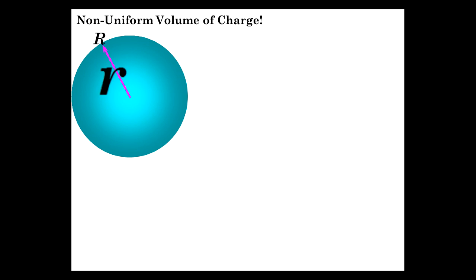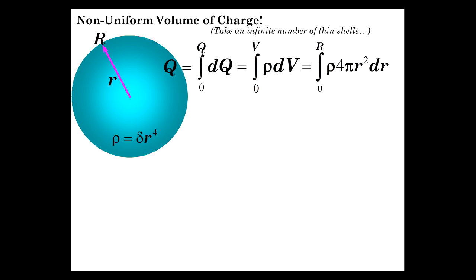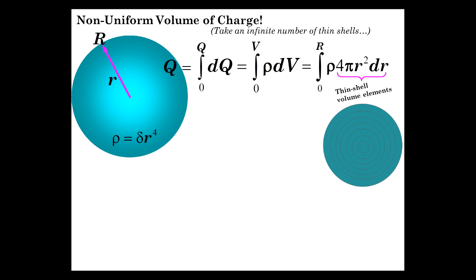You will recognize this example as one we did earlier — finding the electric field inside a non-uniform volume of charge. But this time we're going to find the potential everywhere in space. First, a quick review of how to find the electric field. The volume charge density is δr⁴. So we said Q is the integral of all the dq's, which is the addition of all the ρ dV's — ρ 4πr² dr — those being the volumes of the thin-shelled elements, stacked up.